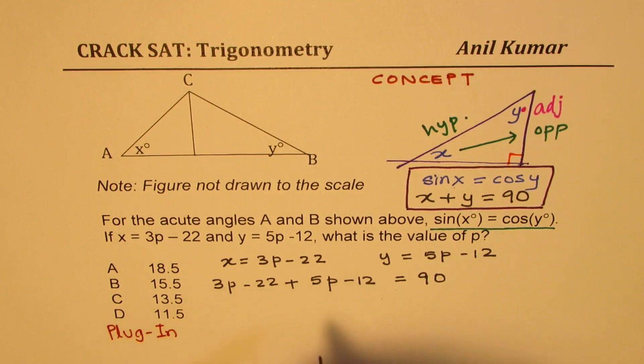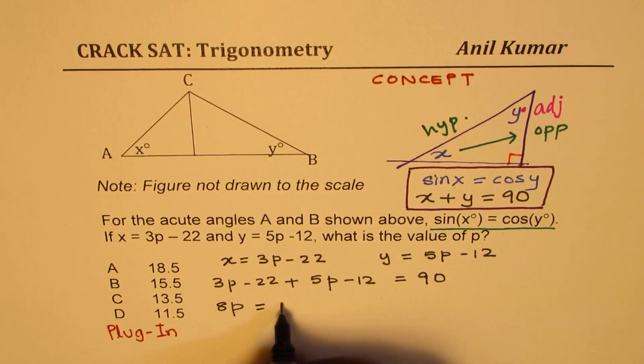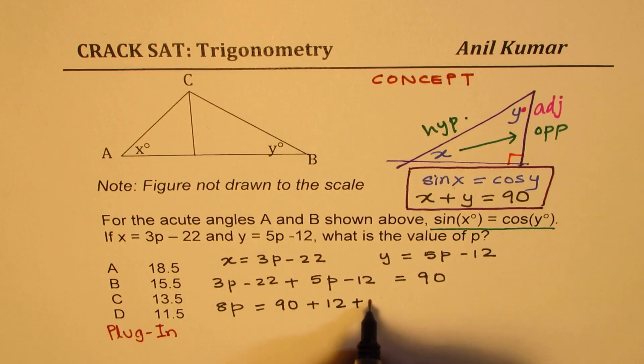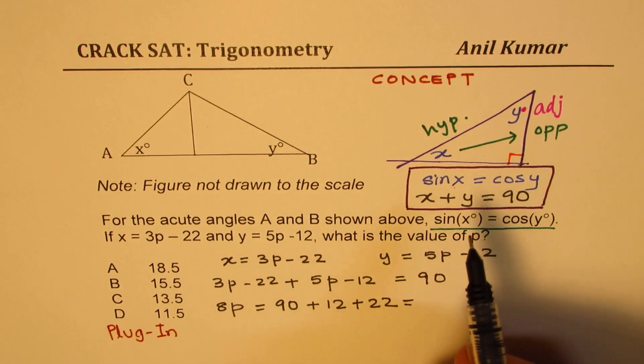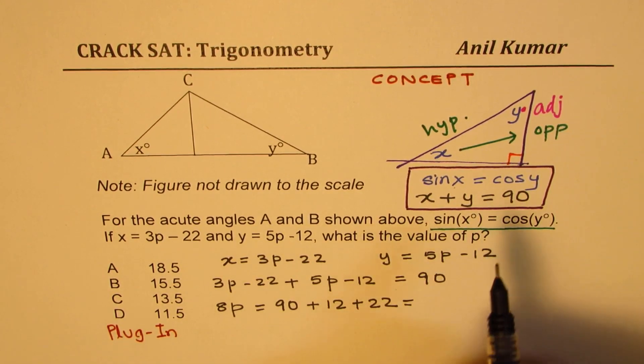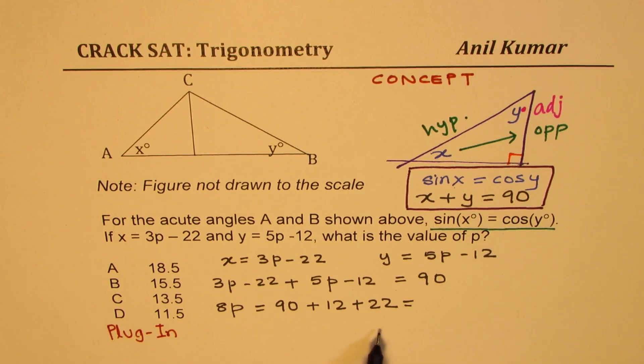Now what we are saying is their sum is 90, right? So we are just saying that 3p minus 22 plus 5p minus 12 is equal to 90. So when you add them, 3 plus 5 is 8p, minus 22 minus 12 we can take to the other side. Well, calculator is allowed, right? So I'm just showing you the calculations. It could be done without a calculator also, right?